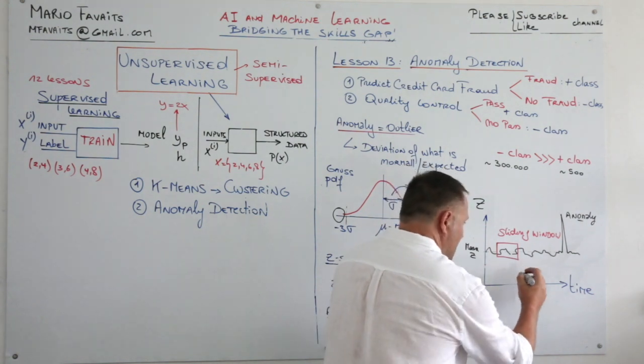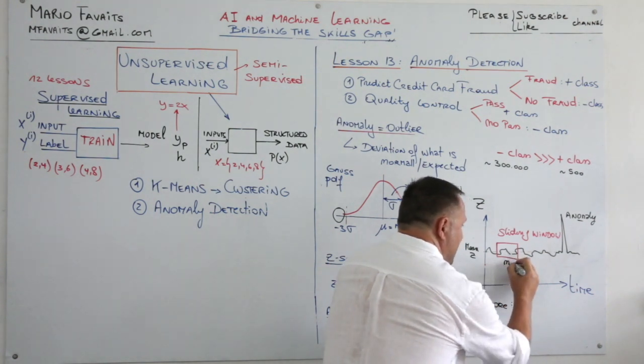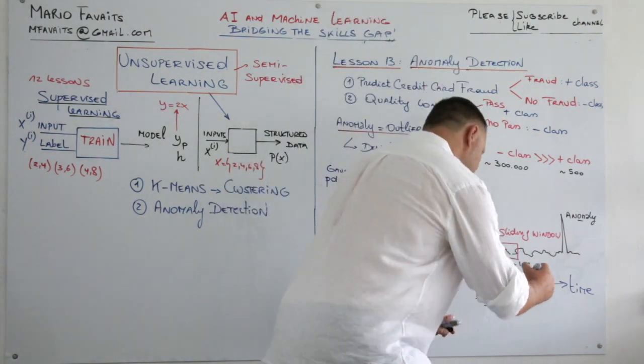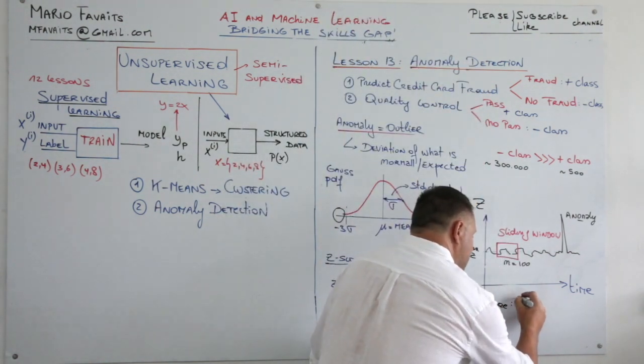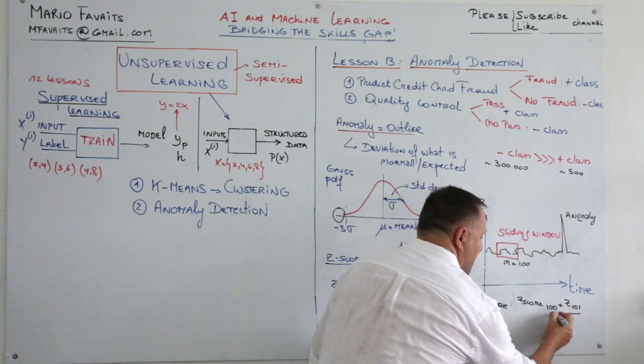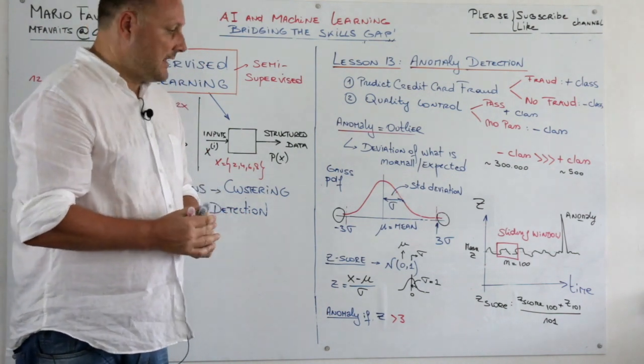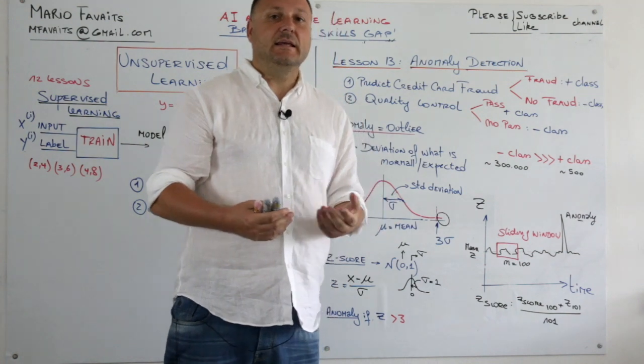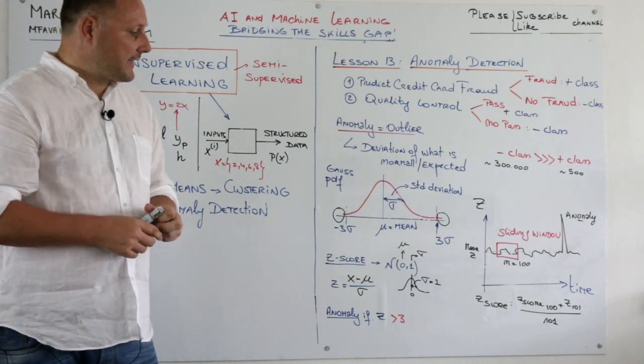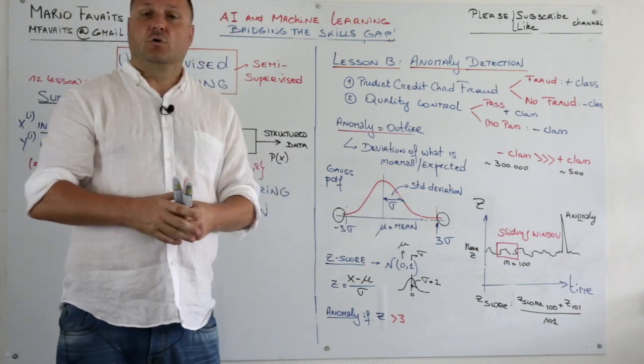So what you do you take the z-score. Assume that this is n equals 100. That means that you only take the last 100 points with you. So the z-score of the next point is the z-score of the last 100 plus the z-score of point 101, and you divide this by 101. This is what we call a moving average. Now technically it is a little bit more complicated than that, but this is not the purpose of this course. We want to take a look at machine learning techniques to actually solve this problem, also in complex cases.